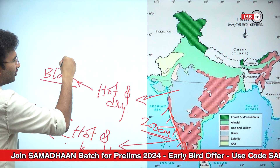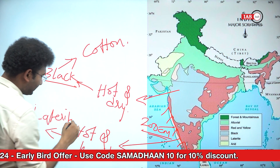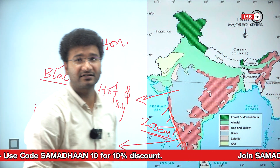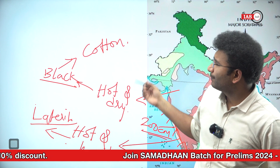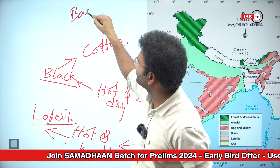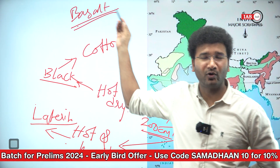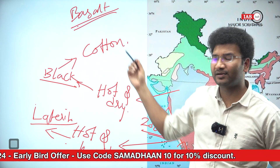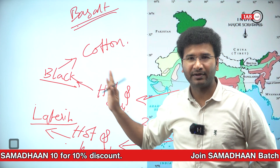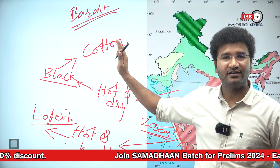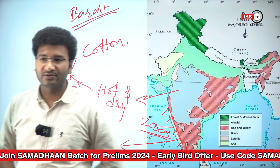In black soil you can see cotton crops grow, while in laterite soil plantation crops grow. So even though the parent rock was basalt, climate determined the type of soil as well as the cropping pattern and the overall type of soil you see. Climate is determining the type of soil, the cropping pattern, and the overall characteristics of the soil.